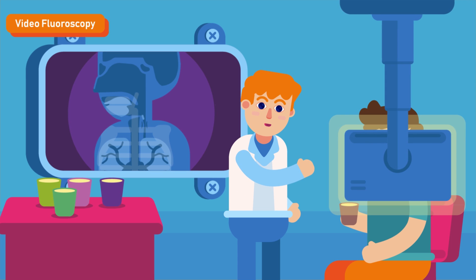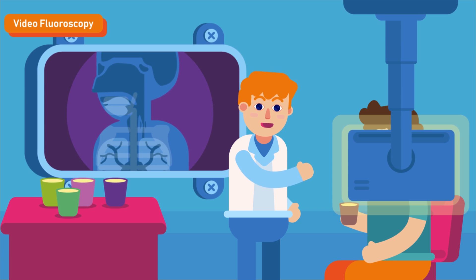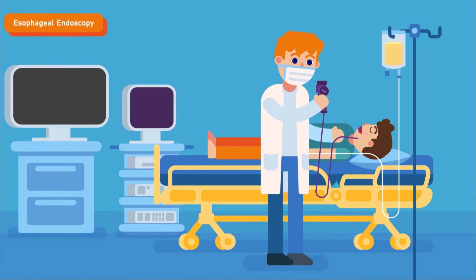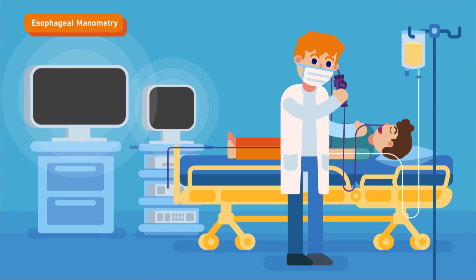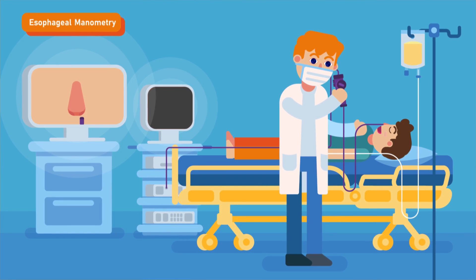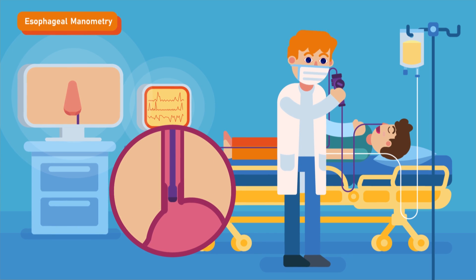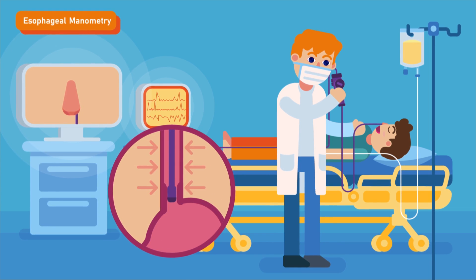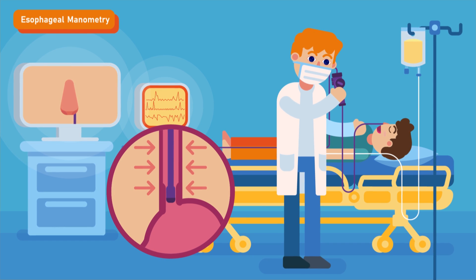Videofluoroscopy is considered a better study than barium swallow. Esophageal endoscopy is particularly useful in patients with esophageal dysphagia in which a structural lesion is suspected. Esophageal manometry involves passing a catheter into the esophagus to measure pressure along its length, and is useful when a motility or propulsive cause of dysphagia is suspected.